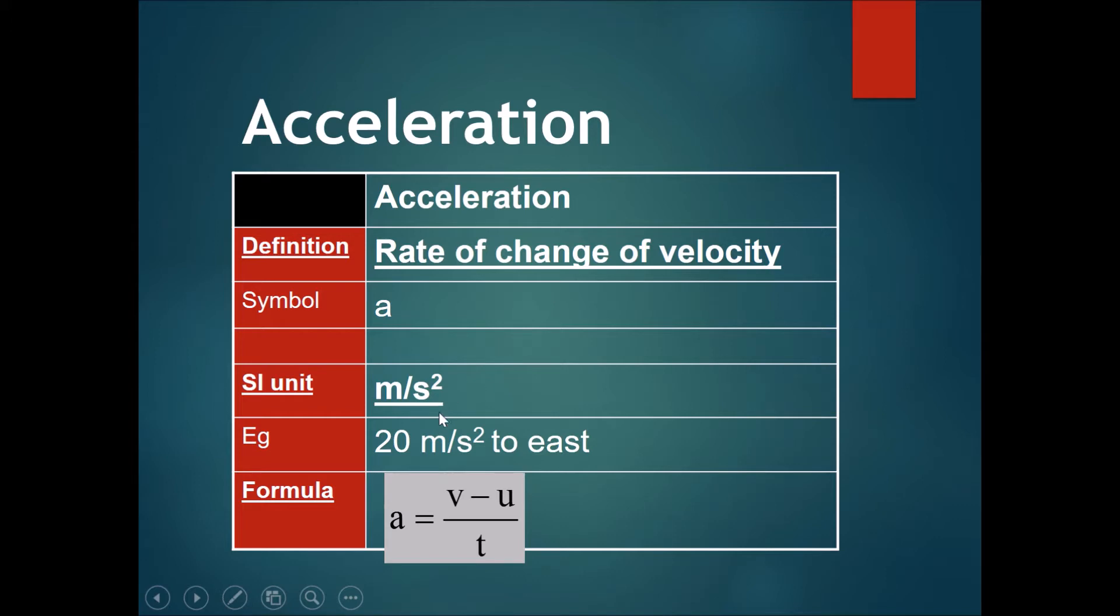It is a vector, so an attitude and a direction. And the formula for acceleration should be a equals V minus u over t. V is the final speed, u is the initial speed, and t is the time taken to get from the initial speed to the final speed.